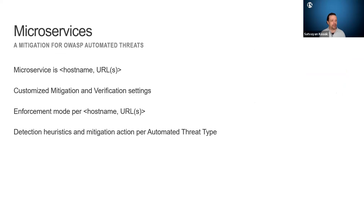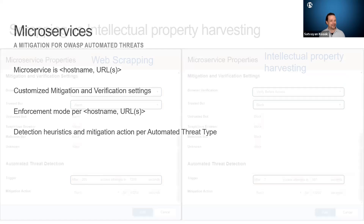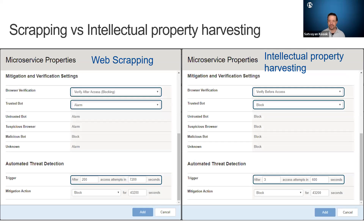We also protect with microservices — this is becoming more and more important as we're going away from monolithic applications to microservices applications. A microservice is a host name and a URL, and we have specific settings for those. You can do browser verification, set trusted categories, and we have specific capabilities for each one. We'll take a quick look at that when we're creating the policy.